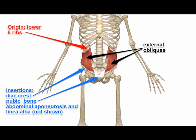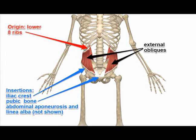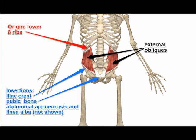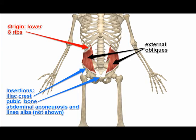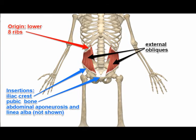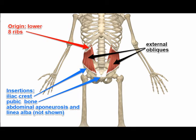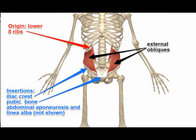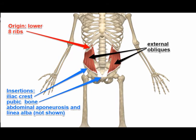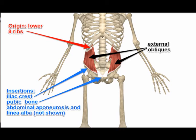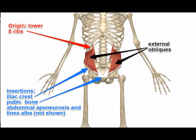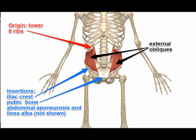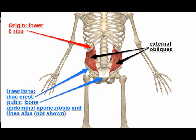The action of the external obliques is abduction of the trunk, rotation of the trunk, supporting the abdominal wall, helping in forced respiration, and also helping to increase the intra-abdominal pressure.